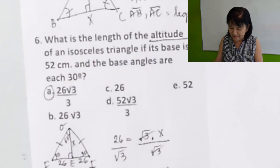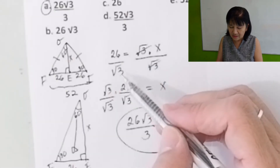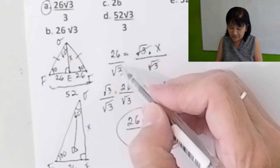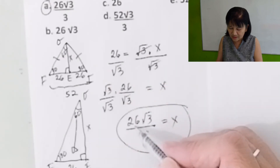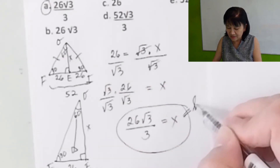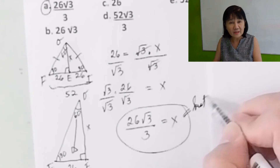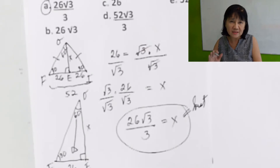The correct answer is A. If the choices include 26, 26 over square root of 3, and 26 square root of 3 over 3, the last one is the best answer. In a UPCAT exam, the simplified answer is always the best answer. Remember that.